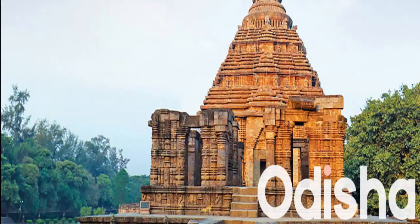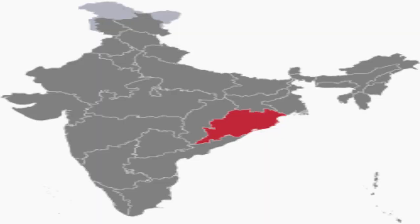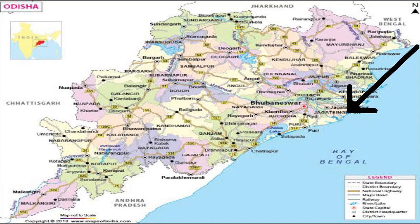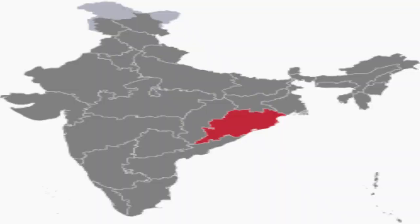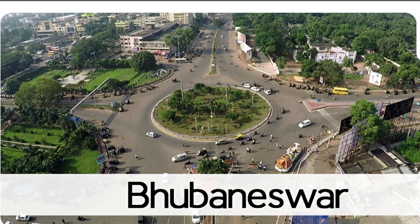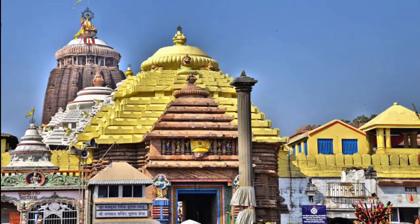Let us start with the state of Odisha. As we move along the coast towards the south from West Bengal, we come to Odisha, which was formerly known as Orissa. It is located in the north-eastern part of the country. The capital of Odisha is Bhubaneswar, which is an important city. Other important cities of Odisha are Puri and Cuttack.